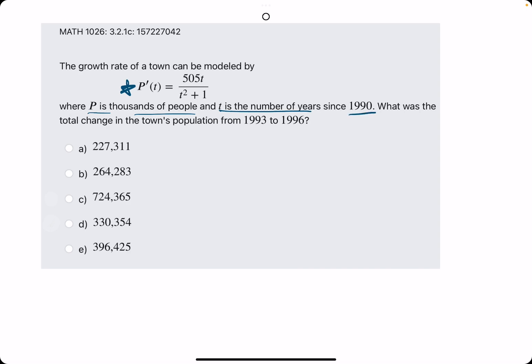And they ask what was the change in population from 1993 to 1996? Since T is the number of years since 1990, 1993 has a T value of 3. 3 represents 3 years since 1990. While T equals 6 represents 1996, since that is 6 years since 1990.